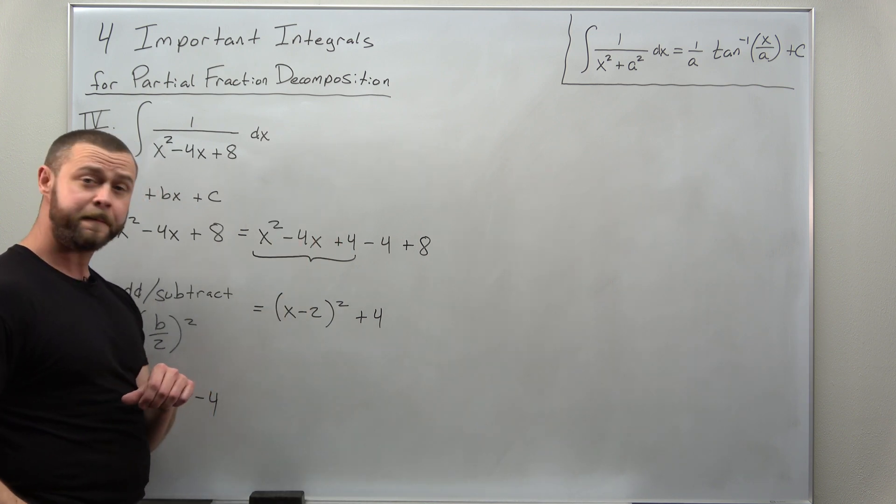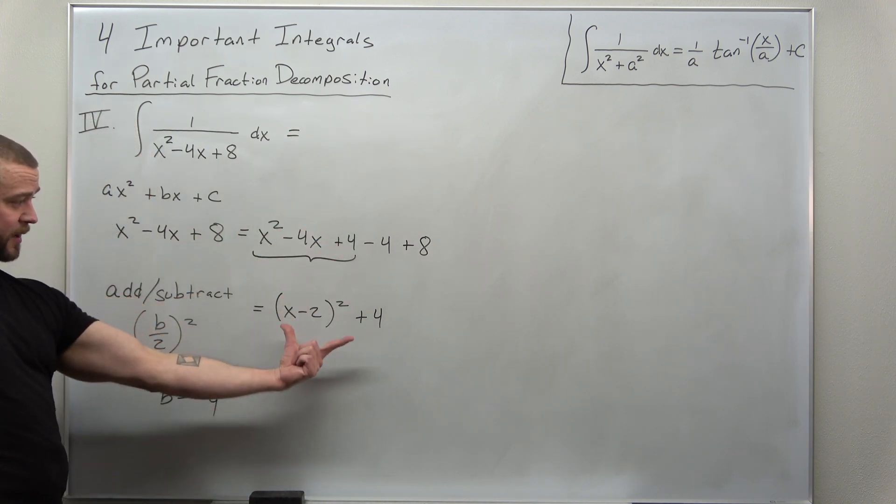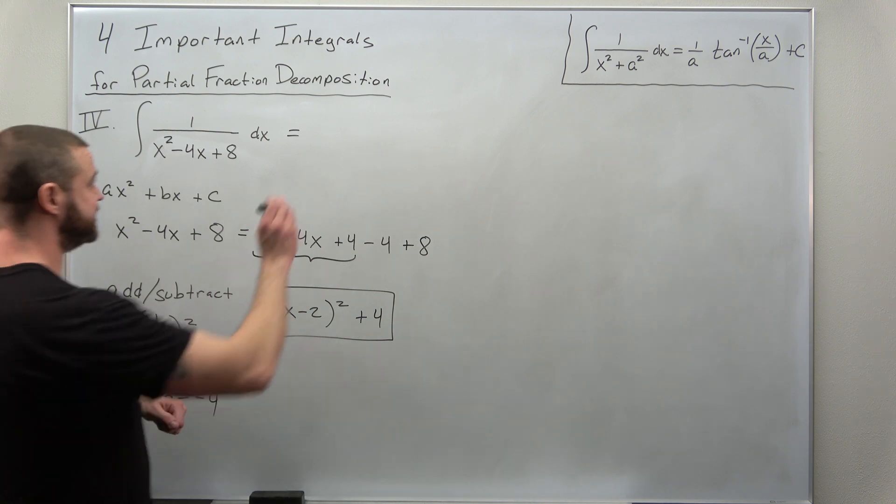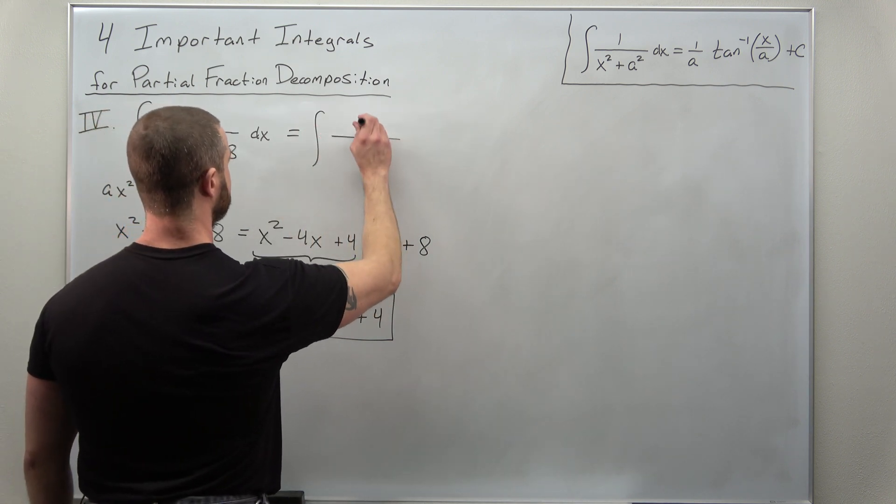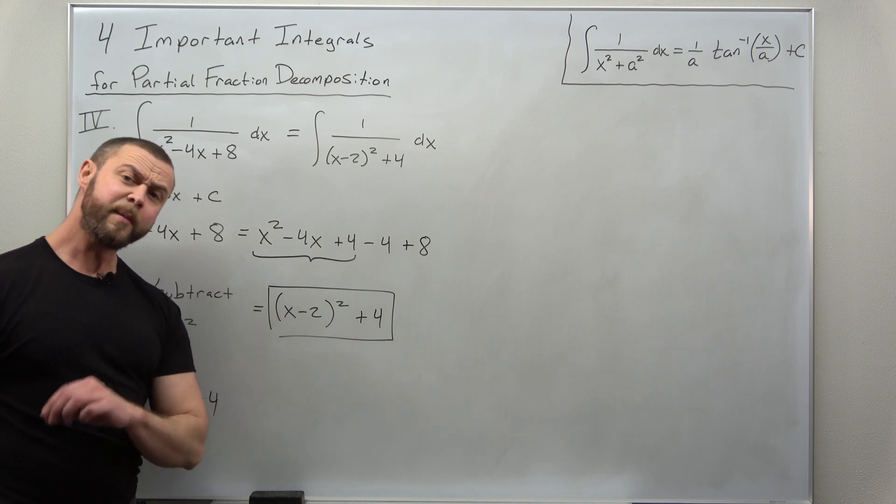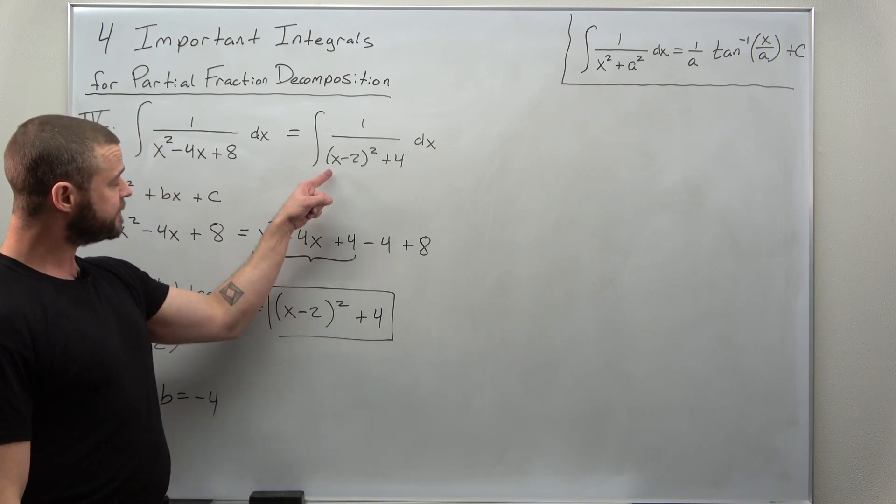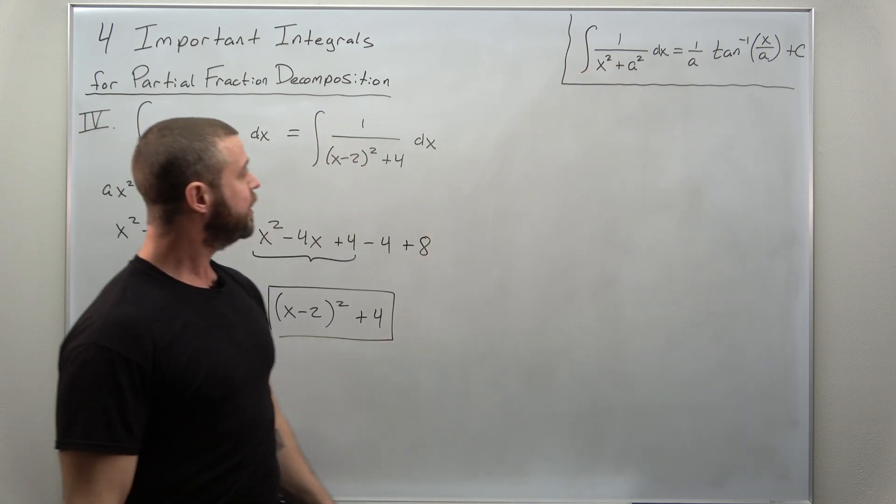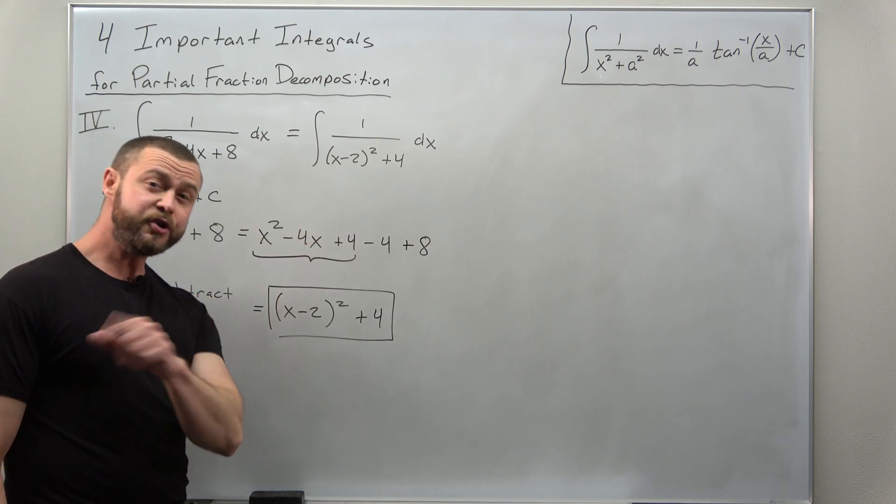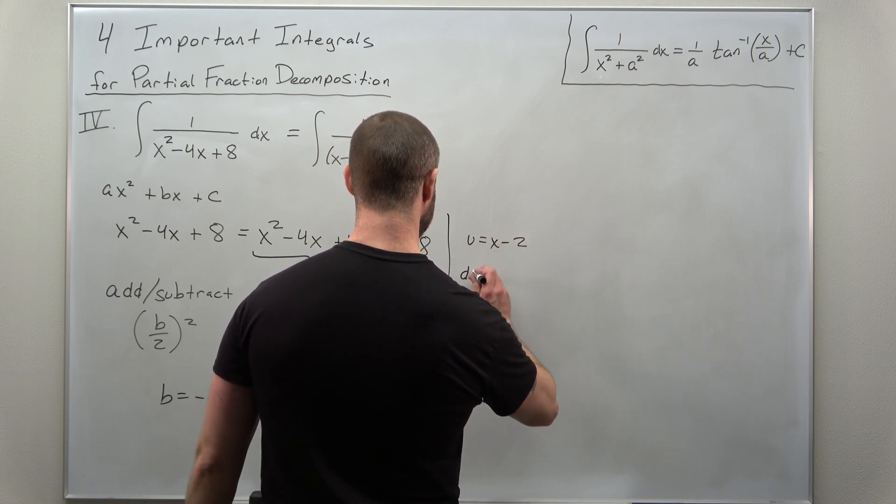So all we've done so far is we've rewritten our denominator in this form of completing the square. So our denominator will replace it as is. And you might be able to do this without a substitution, but let me go through a substitution. I want to convert this to make it look exactly like that, where we have a variable squared plus a number squared. So I'll choose u as x minus 2. du is then dx.